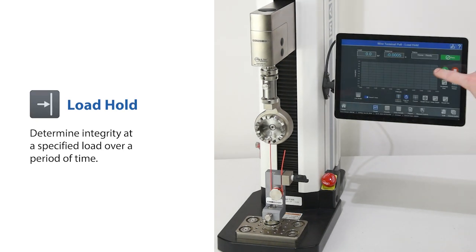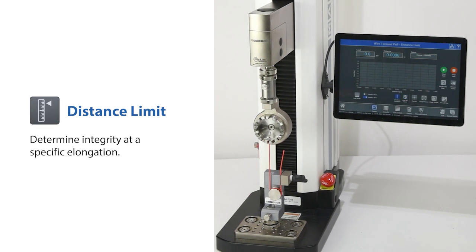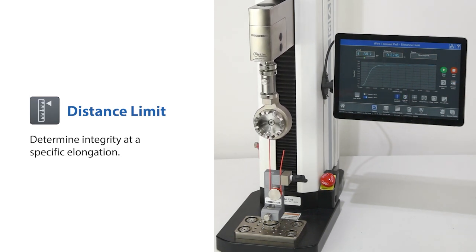A load hold test is used to determine a wire terminal's integrity at a specified load over a period of time. A distance limit test is used to determine a wire terminal's integrity at a specific elongation.